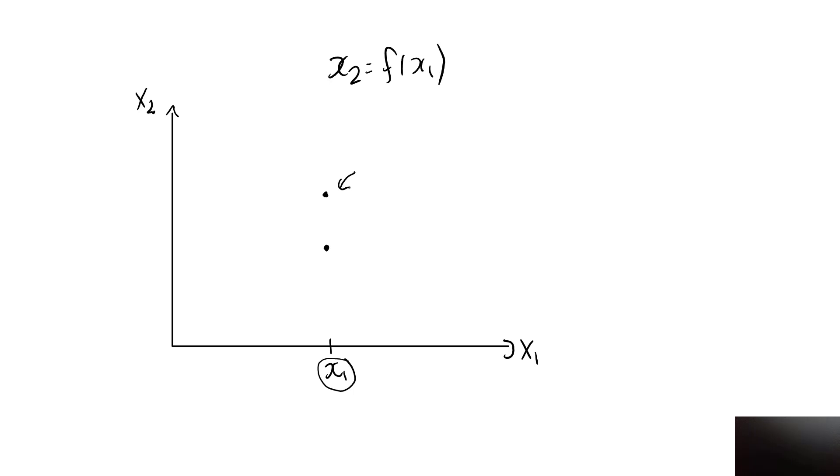So by strict monotonicity, this bundle must be strictly preferred to this one, and they cannot lie on the same indifference curve. So for a given value of x1, there can be at most one point or one bundle on the indifference curve.